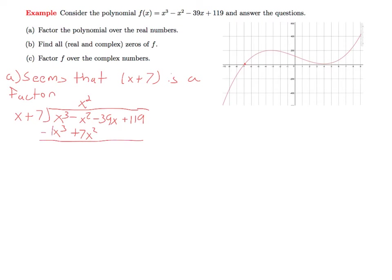And subtracting, the x cubed cancels. What's left is minus x squared minus 7x squared, which gives us minus 8x squared. And we bring the remainder down.